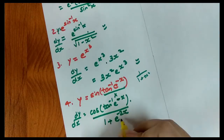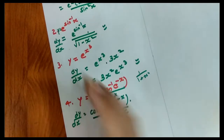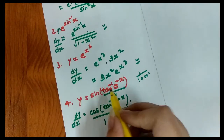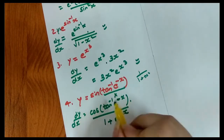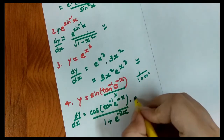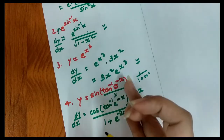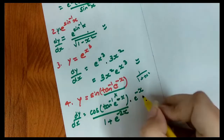Continuing, we differentiate e^(−x): the derivative of e^(−x) is −e^(−x). So the derivative of −x gives us a factor of −1, completing the chain rule application for this question.